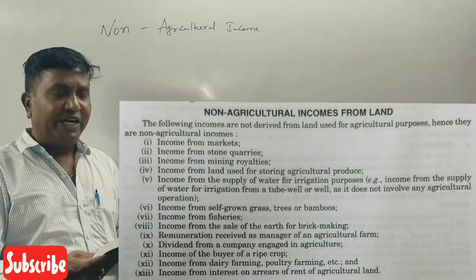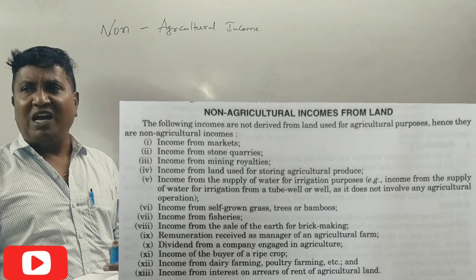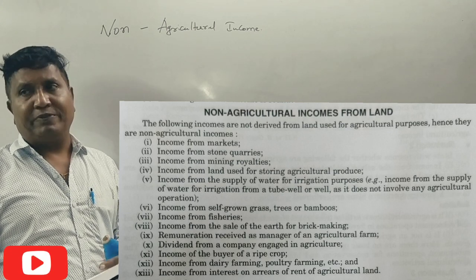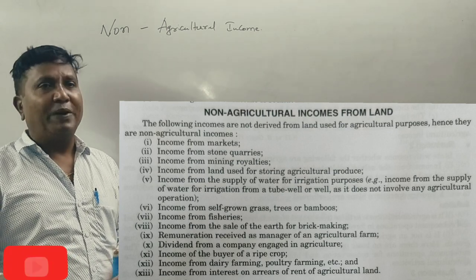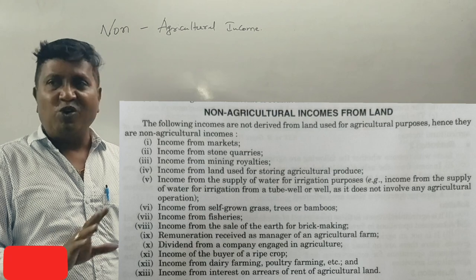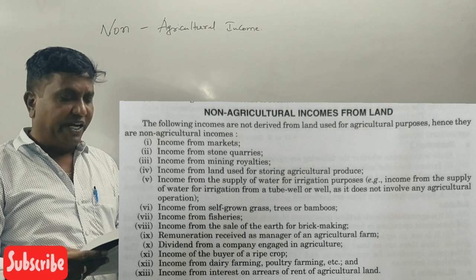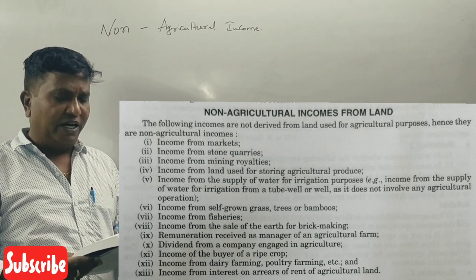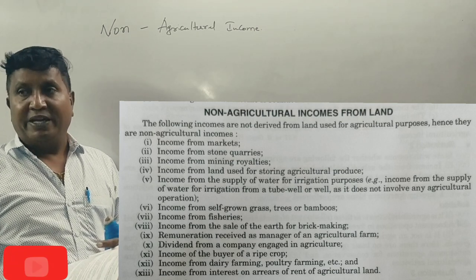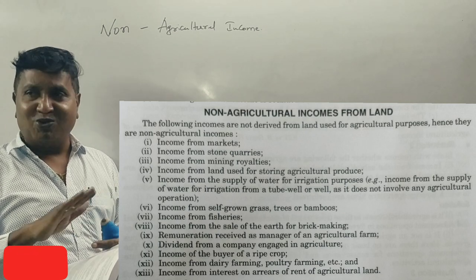Income from fisheries is non-agricultural income. Income from sale of earth and brick making is also non-agricultural income. Income from dairy farming and poultry farming — these are all non-agricultural in nature.